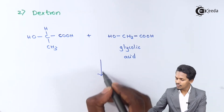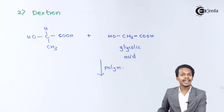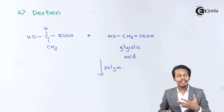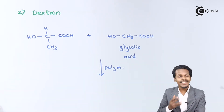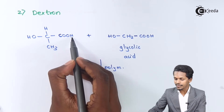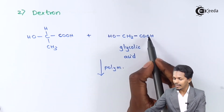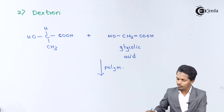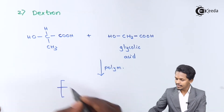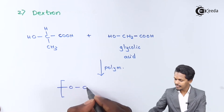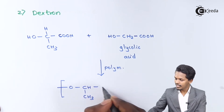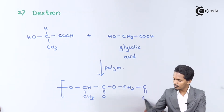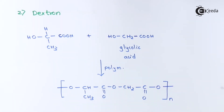The polymerization reaction is again a condensation reaction, forming a copolymer by eliminating water molecules. The H and OH groups are eliminated from each monomer. The repeating unit of the resulting polymer is: -O-CH(CH3)-C(=O)-O-CH2-C(=O)-. This is the dextron copolymer.